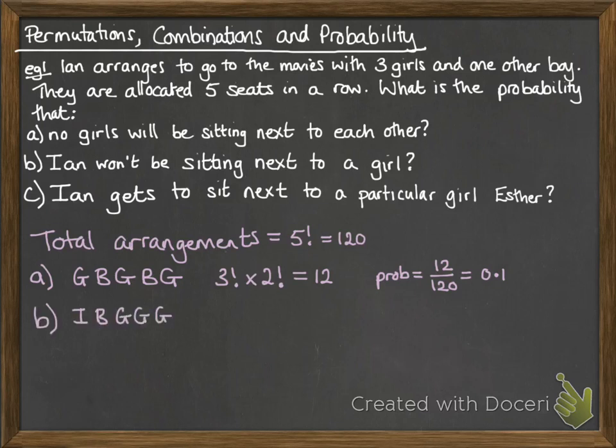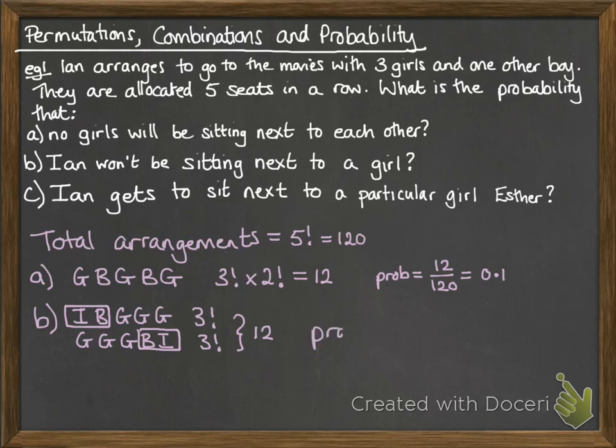For the second one, the arrangement would have to put Ian on the end with the other boy next to him — those are the only two possible ways that Ian's not sitting next to a girl. Each of those gives three factorial ways, because the block with Ian and the other boy is fixed and only the girls' positions change. Adding those two together gives 12, so our probability is again 0.1.